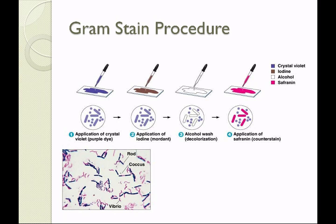Following a rinse with water, we apply the alcohol wash. This decolorization step is critical and must be done briefly, because overdoing it affects the outcome. The alcohol removes crystal violet that is not tightly bound. A Gram-negative organism with a thin peptidoglycan layer cannot retain the crystal violet — the alcohol washes it away quickly, leaving the cell colorless. We then apply the counterstain Safranin, also a basic red dye. When finished, Gram-positive organisms stain purple and Gram-negative organisms stain red.